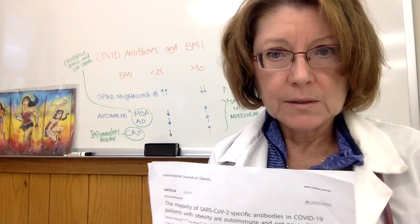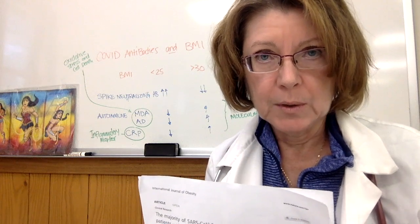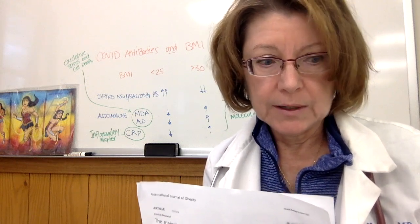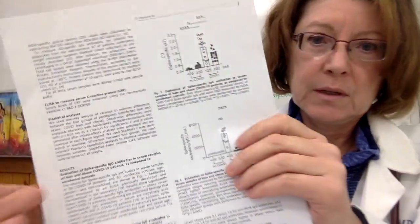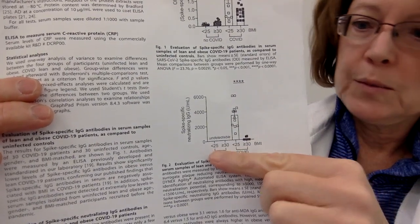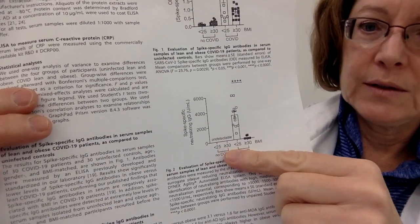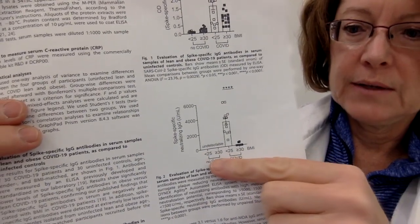This was a group of 30 patients, 15 with a BMI over 30, and 15 matched to that group with a BMI of under 25. So I'll show you, if you can see here, this group had no COVID infection at all, and you can see that they had no spike neutralizing antibodies, of course, because they did not have any infection.